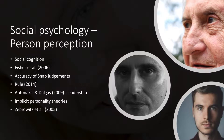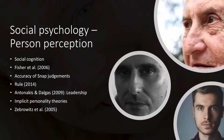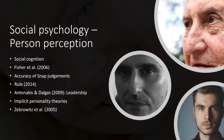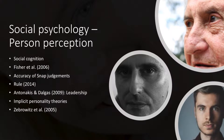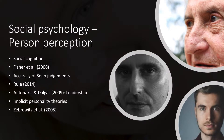Also along the lines of unconscious intentions, implicit personality theories are personal ways of categorizing people, used to guide judgments, and consist of beliefs about relationships between traits and behaviors. These allow us to assess and perceive other people's personalities.